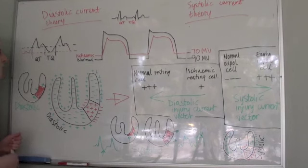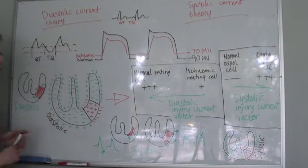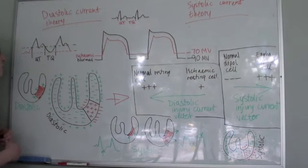So when there is this abnormal shift in the TQ area, that is translated as a shift in the baseline, basically.